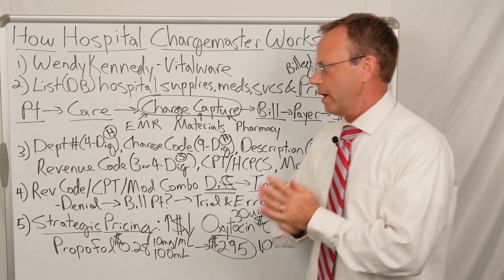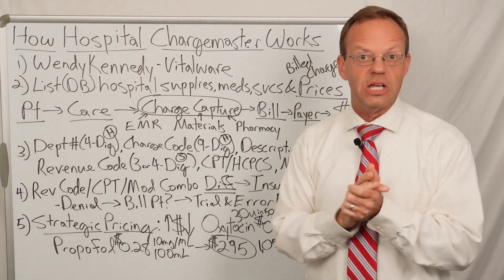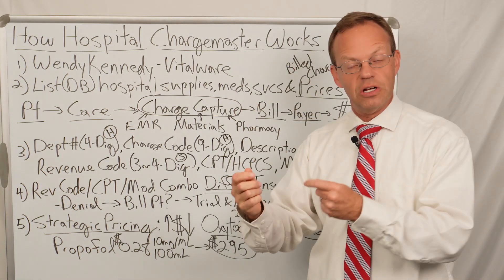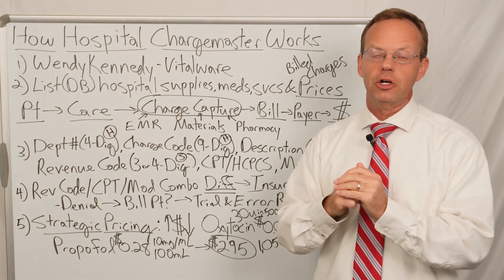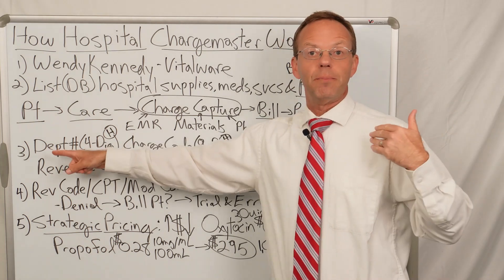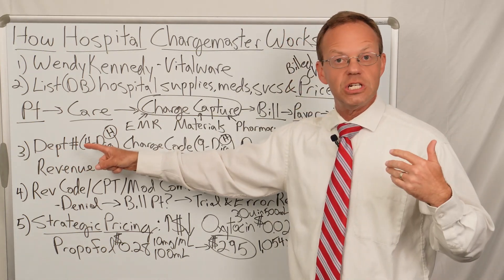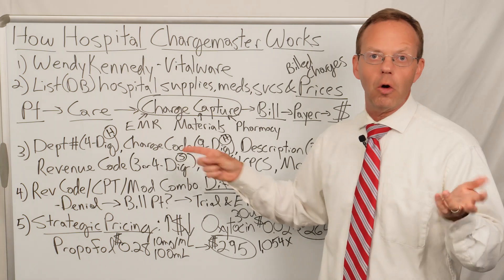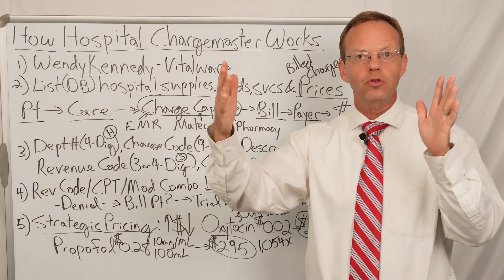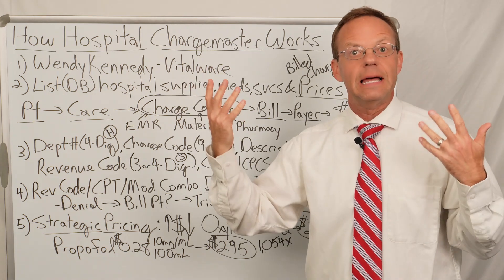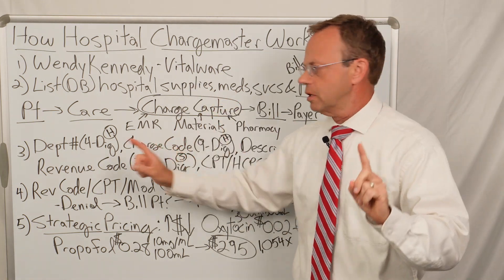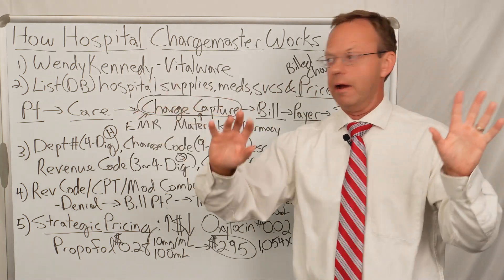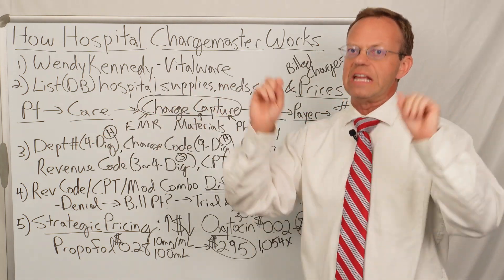The charge master database has various columns or categories for everything that's done — like an intramuscular injection or administration of an IV fluid or antibiotic. It has a department number, typically a four-digit number, where the department could be radiology, pathology, or the ER. Then it has a charge code — often a nine-digit numeric code — almost like a license plate for the particular service or medication. Note that department numbers and charge codes are hospital-specific; each hospital makes up its own, so you can't compare them across hospitals.